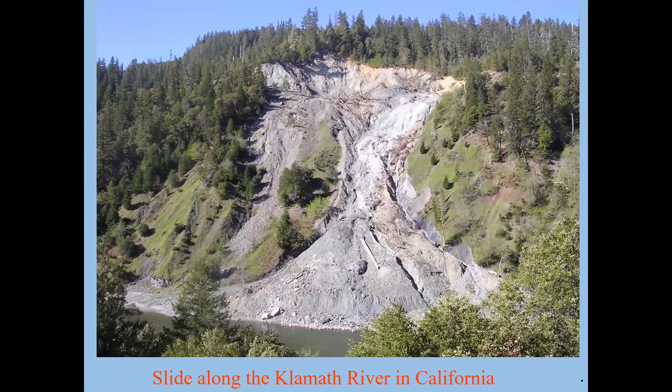This is a slide near the Klamath River in California — steep terrain, unstable rocks. We'll learn in the plate tectonics chapter why the coast range is so rotten and the rocks weather so easily. Add the steepness and you have a recipe for disaster.